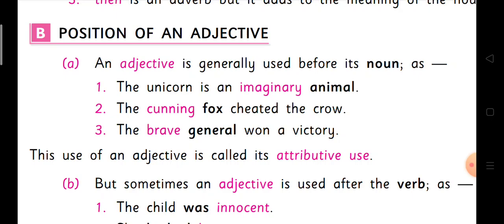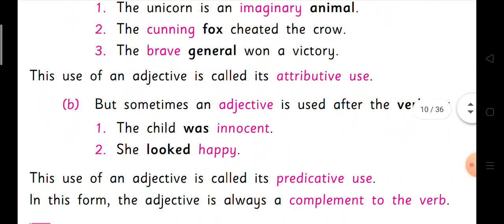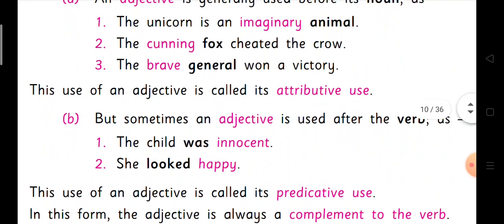Here, three examples are given. The unicorn is an imaginary animal — not 'animal imaginary'; the rule is 'imaginary animal.' Then, cunning fox — fox is the noun and cunning is the adjective. And brave general — general is the noun and brave is the adjective. This use of an adjective is called its attributive use.